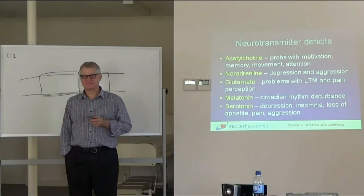Melatonin - can anyone tell me what melatonin is associated with? Sleep. When you get back from a trip overseas, you have jet lag. Melatonin is a really important neurotransmitter because it helps to regulate our circadian rhythm, our sleep-wake cycle. That's why, when it's disrupted by the loss of brain cells in Alzheimer's disease, we get disruptions to sleep-wake cycle for people with Alzheimer's disease.